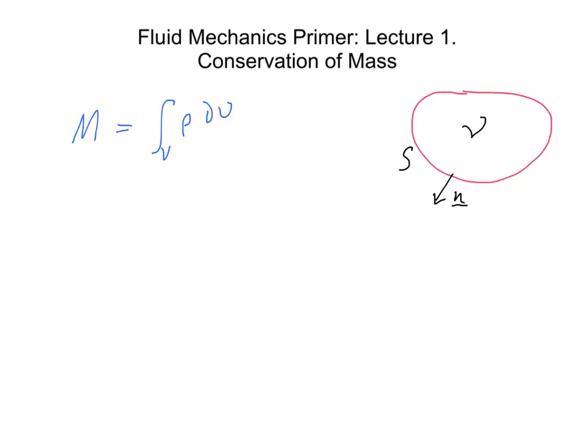So across to the right here I've drawn our volume V. We think of this as a control volume, and the control volume might vary as a function of time. It has a volume V, it has a surface area S, and it also has a unit normal which is a vector n defined at every point on the surface.